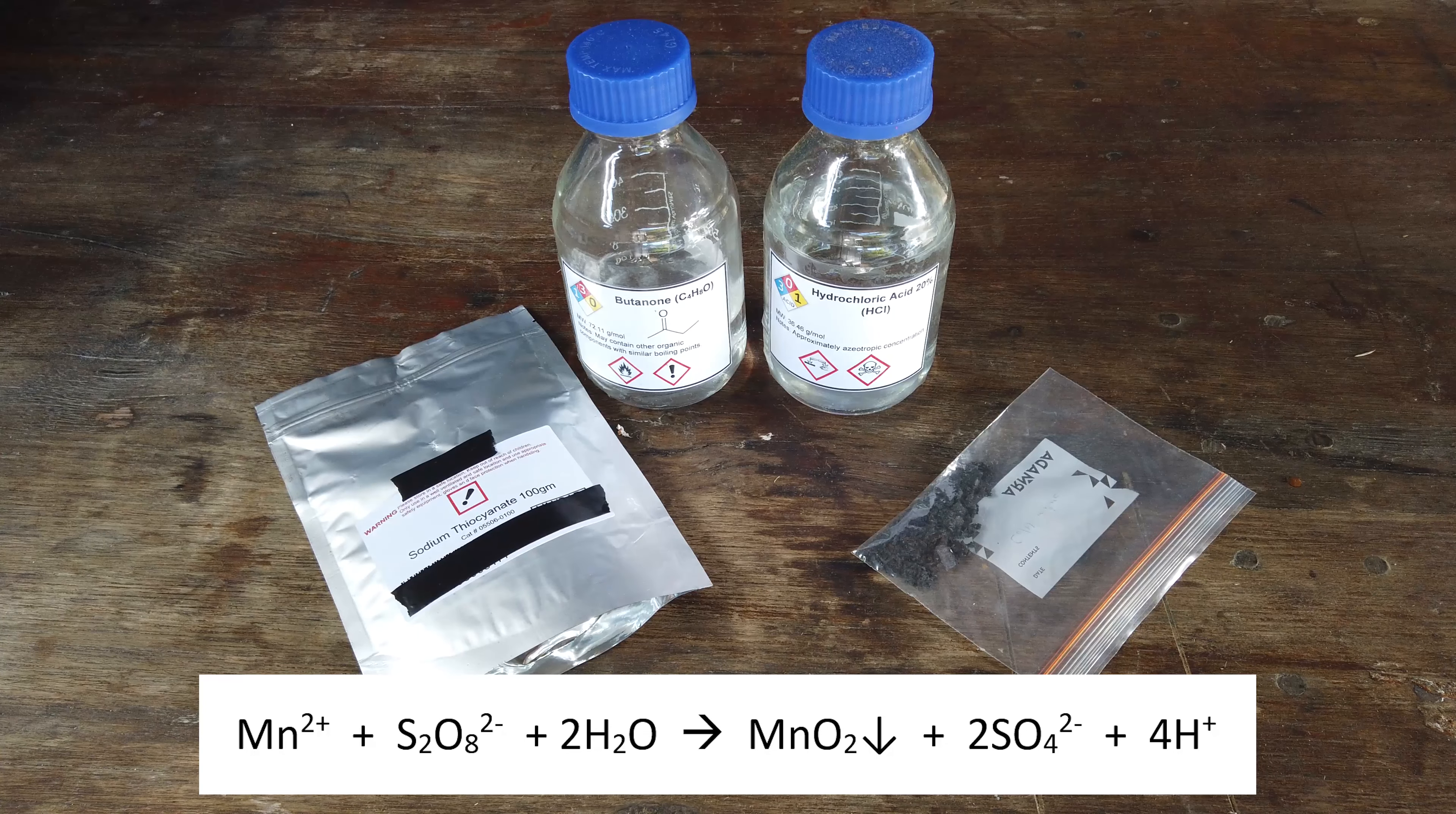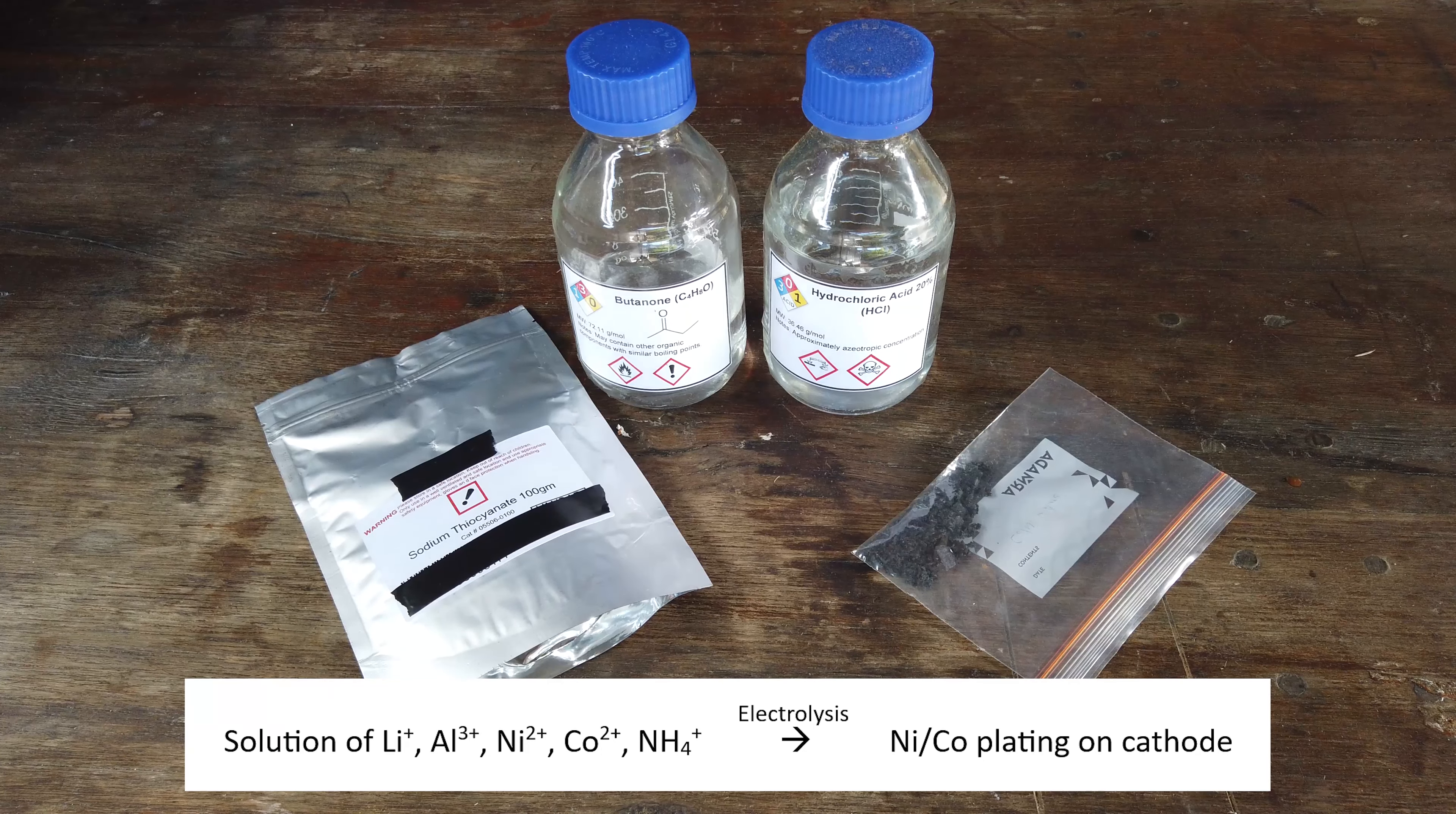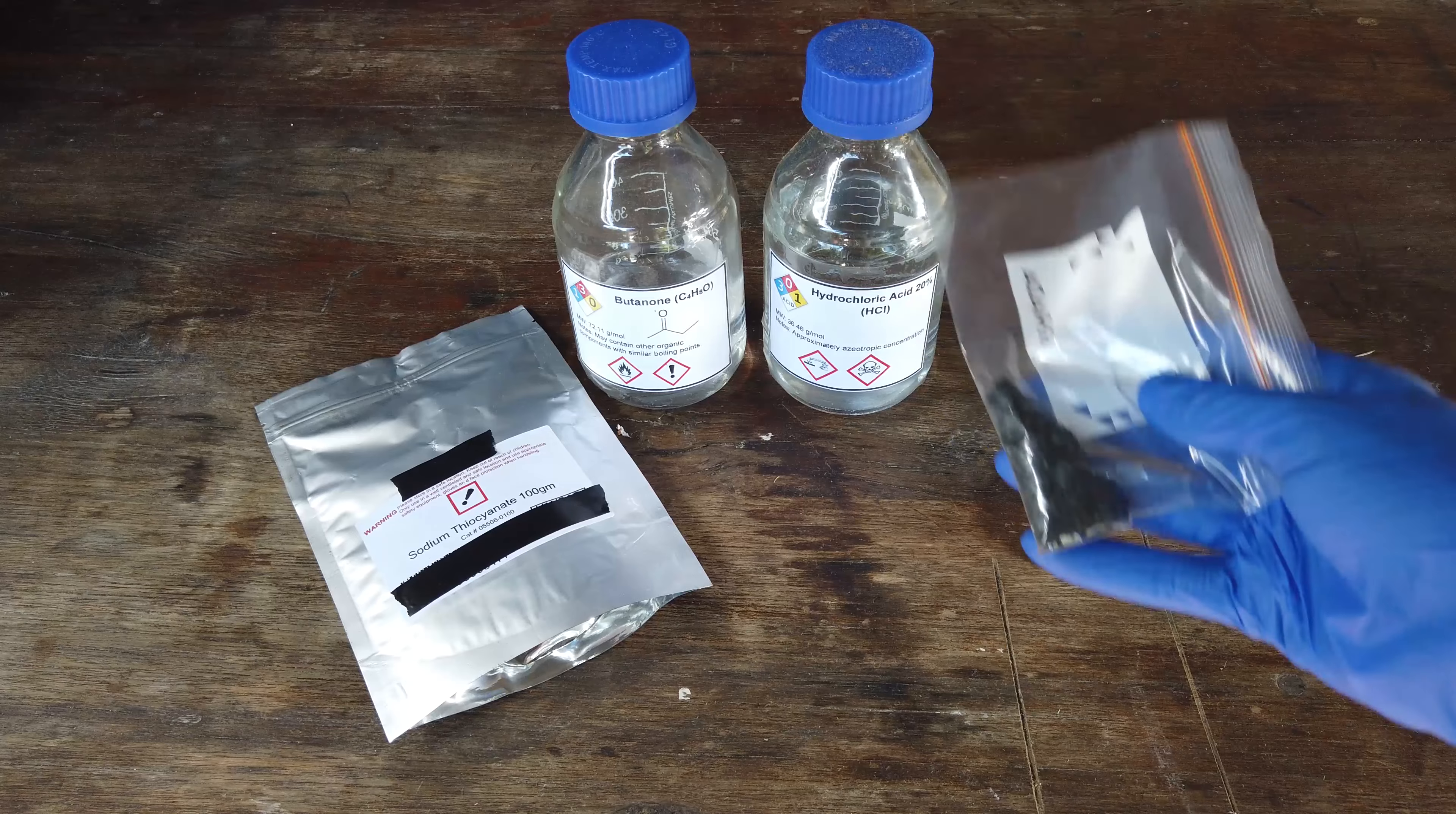With trial and error, the next step was an electrolytic process for removing the rest of the transition metals, specifically cobalt and nickel. We slowly electroplated them onto our cathode to produce a metallic mixture of cobalt and nickel. The small sample from the last video, about 10 grams, is right here, and that's what we're working with today.